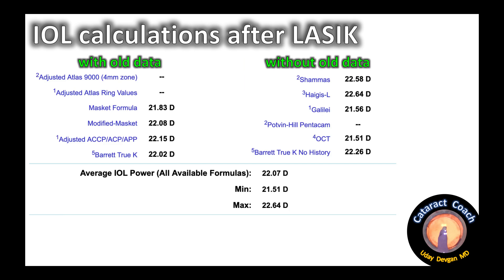The results printout on the ASCRS calculator has two main columns — one with old data and one without — and they are remarkably similar. It calculates only for data you've entered. Looking at the left column (with old data), most formulas cluster around the 22 diopter mark for the IOL to achieve a plano outcome. The right column (without old data) is similar, perhaps slightly higher. The average of all available formulas is 22.07D, with a minimum of 21.51D and a maximum of 22.64D. Some surgeons use the average; others prefer specific methods like the modified Masket, Barrett, or Haigis — you learn this with experience.